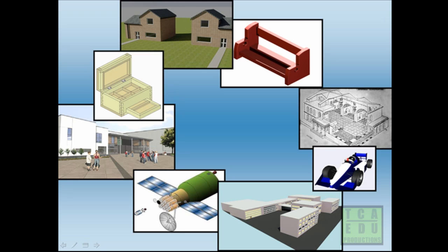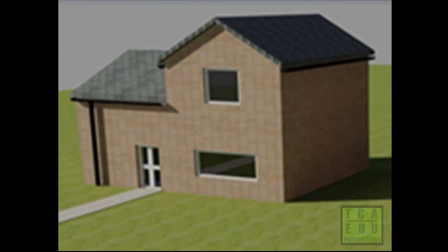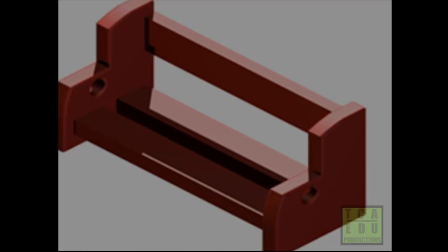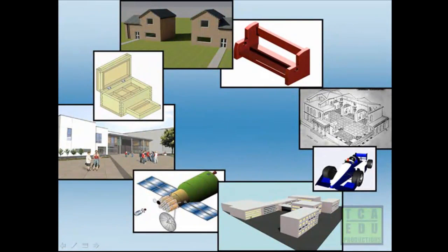The subject of the drawing can be just about anything, and although this will affect what type of pictorial drawing you wish to use, what's more important is what it is you're trying to get across to the viewer. So if you were showing an object that you wanted to be built by somebody, then you might go for one of the more technically accurate pictorial drawings. However, if you're wanting to sell what it was that you're showing, then you would probably want to go for something more visually striking and more accurate to what would be seen when looking at the object from a particular distance away.